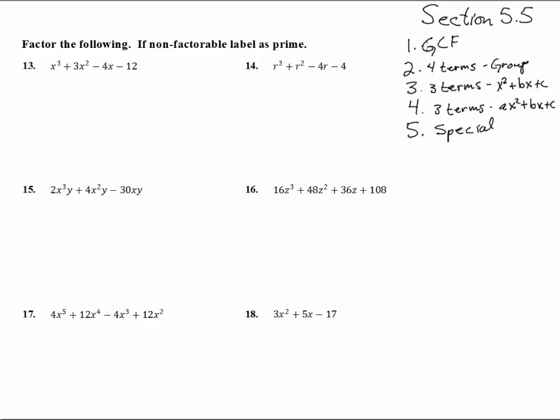First method that we ran into is greatest common factor, so let's double check this one. Anything? Nope, that guy doesn't have an X and that only has X's, so we definitely don't have that. So let's check how many terms we have. We have four terms, so we go over here to method number two, chop that guy in half.